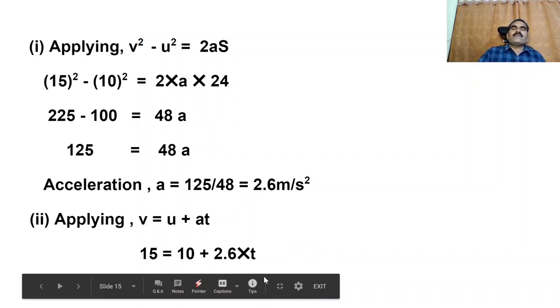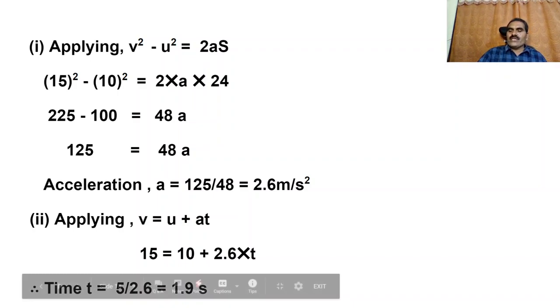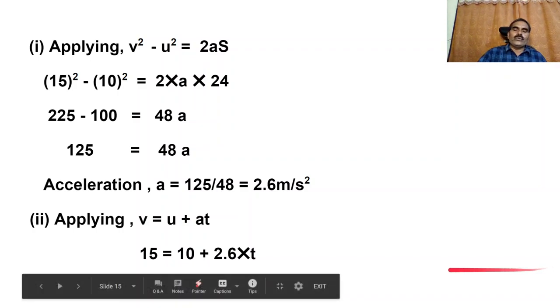This is the mathematical application for V square minus U square equals 2AS.